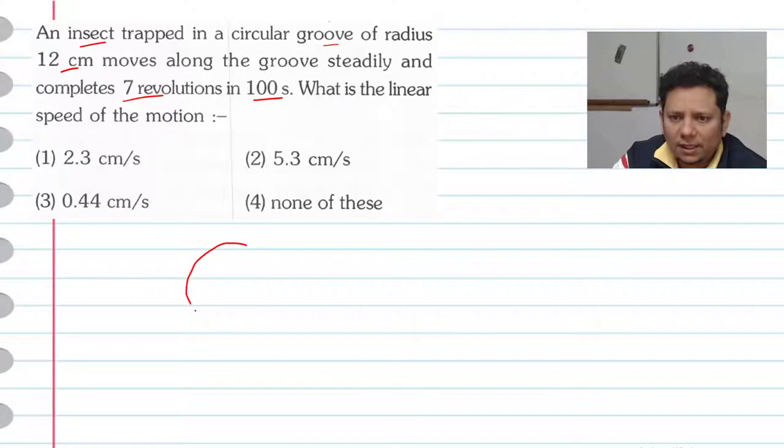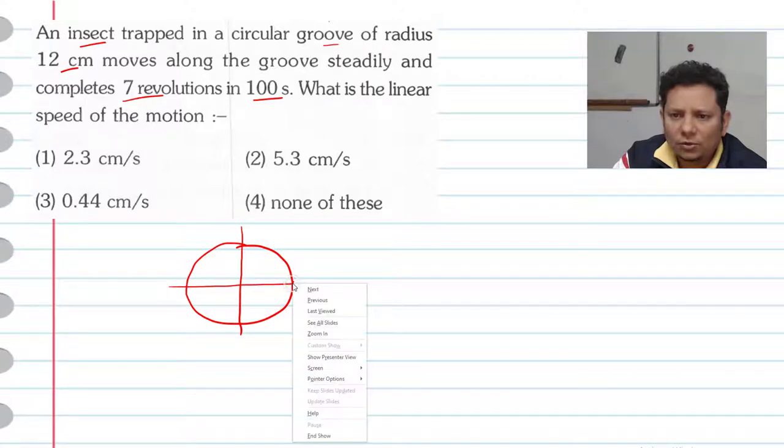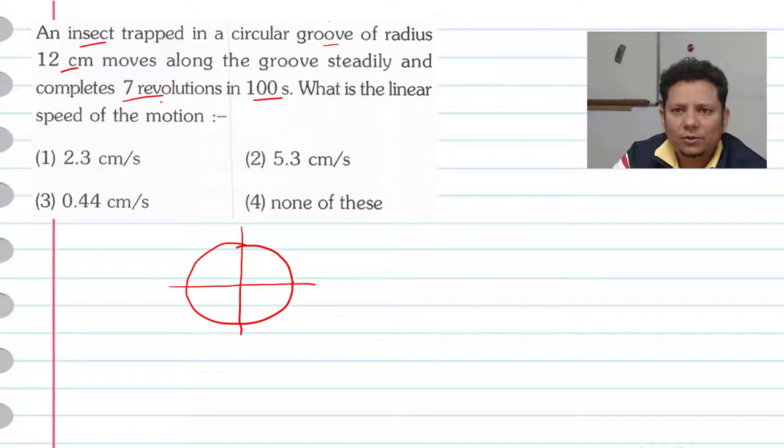Now the scenario is that you have a groove and you have an insect, and it is stuck here and it is going to go like this. Here you have a complete 7 revolutions in 100 seconds.